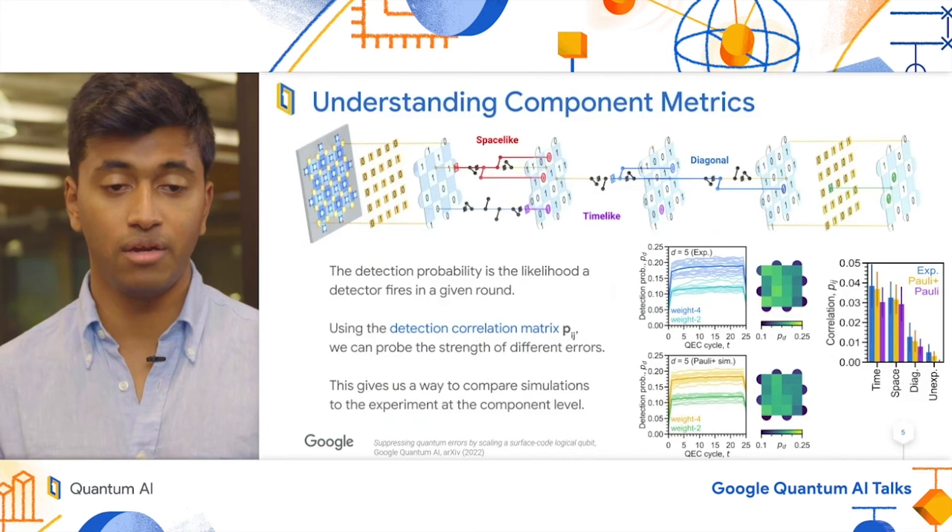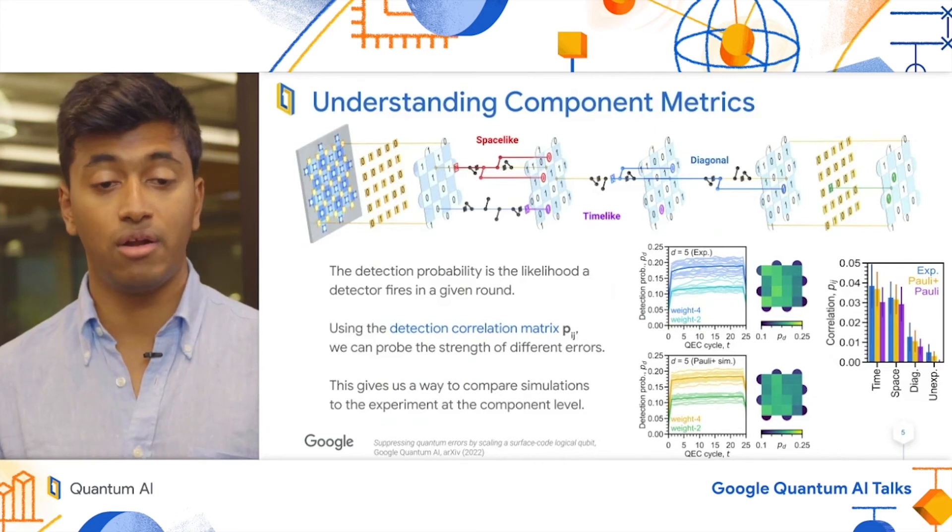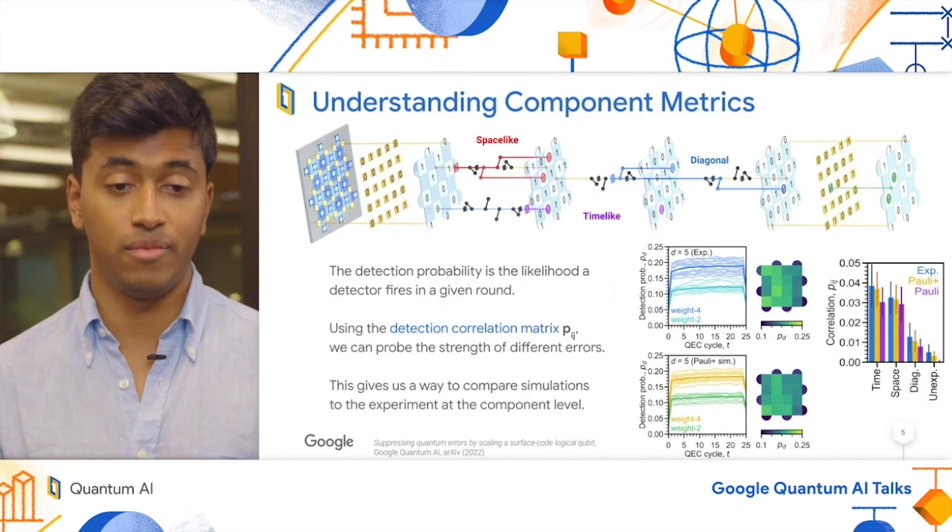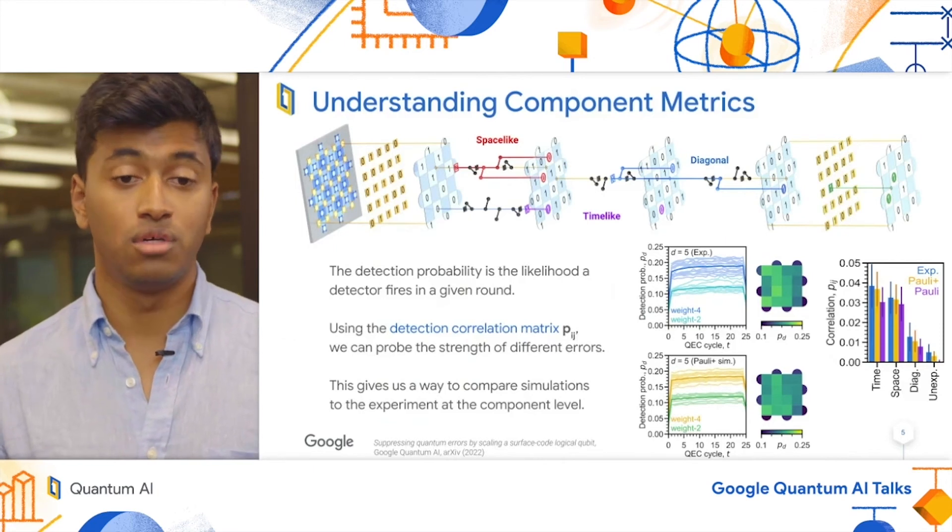Space-like errors, shown in red, occur when an error happens before any of the stabilizers in a round are measured. This leads to two detectors in the same round going off, which are space-like separated.